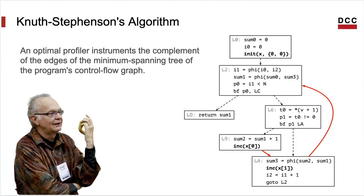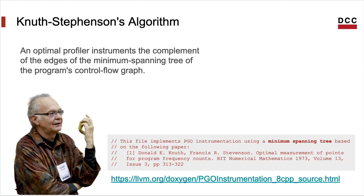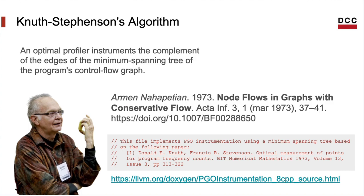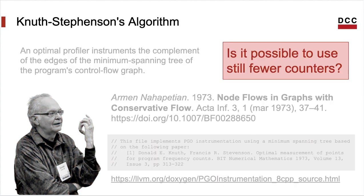Kirchhoff's circuit law leads to a very beautiful result in computer science — the Knuth-Stefansson algorithm. To build an optimal profile, you need to instrument the complement of the edges of a minimum spanning tree of the program's CFG. You can find a citation to Knuth's paper in the LLVM source code and in the Bold source code as well. The first paper to mention this result may be due to Narapitian, published slightly before Knuth's paper. But can we do even better and use fewer counters than the complement of the minimum spanning tree? The goal of this paper is to show that such is possible.